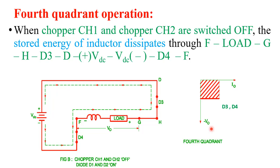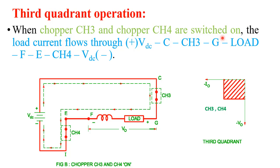Third quadrant operation: when CH3 and CH4 are switched on, the current flows through supply voltage VDC, through CH3, through the load, and the inductor charges with polarity positive and negative. Current then flows through CH4 and back to VDC. The direction of this current is opposite to the reference current direction and the output voltage is also negative, so the device works in the 3rd quadrant.